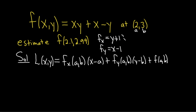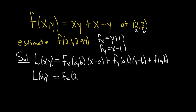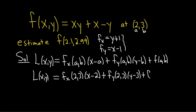We want these partials evaluated at (2,3). So L of x,y equals fx at (2,3) times (x minus 2) — because our a is 2, and this is a function so you can use it to compute lots of values — plus fy at (2,3) times (y minus 3), plus f of (2,3).